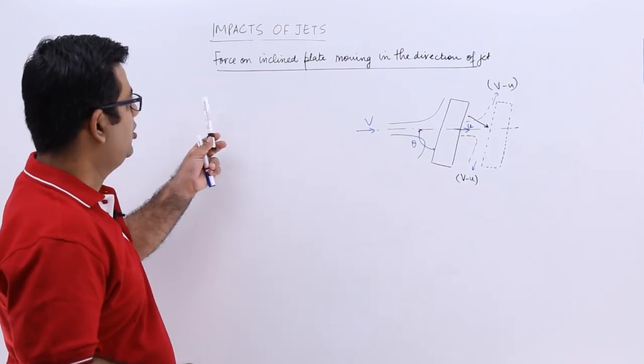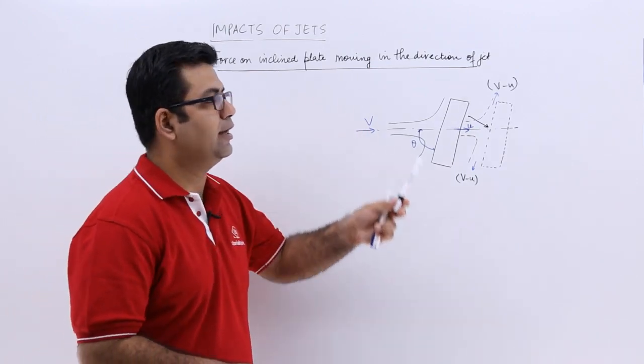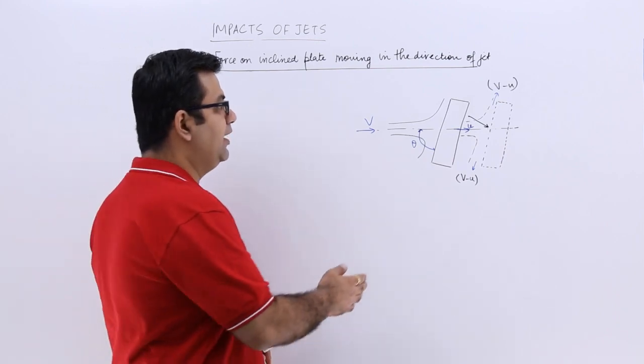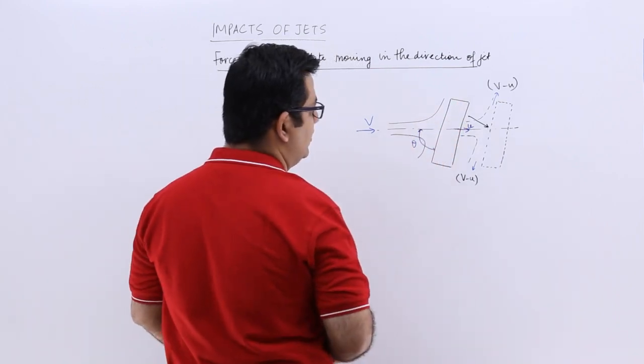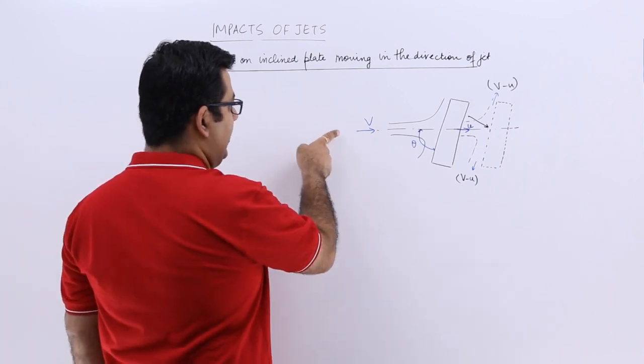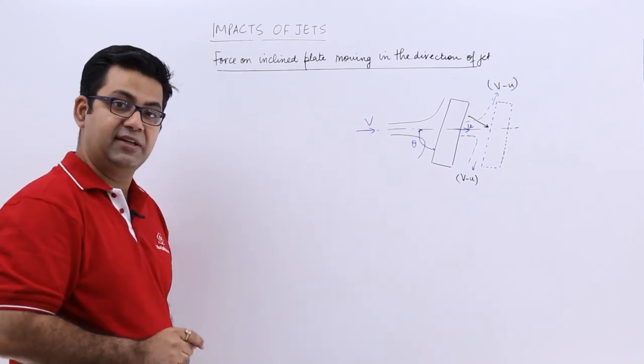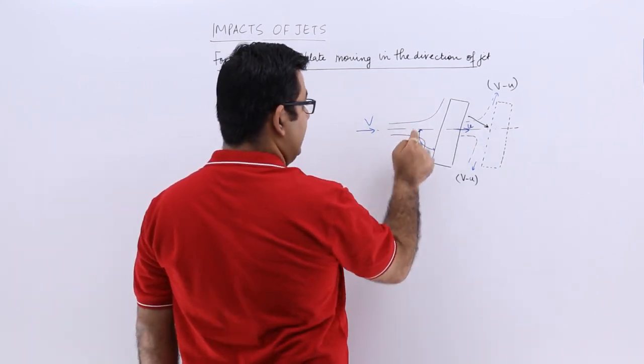Now let's talk about force on inclined plate moving in the direction of jet. The plate is inclined, not flat, and the angle between the direction of motion of jet and the plate is theta.